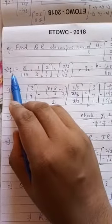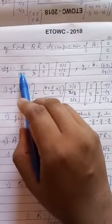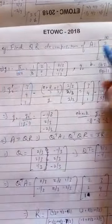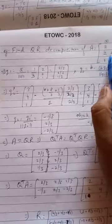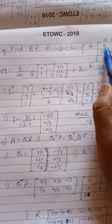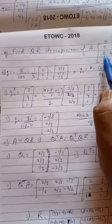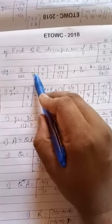So first we find the first orthonormal vector, which is Q1. And that is nothing but the vector A, which is 2, 2, 1 divided by its length. So you can see here that the length of this vector will be root of 4 plus 4 plus 1, which is root 9, which is 3.